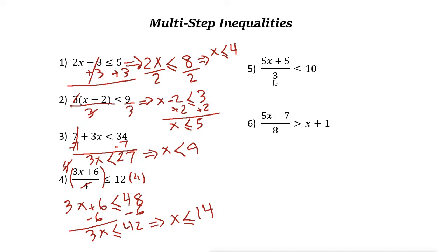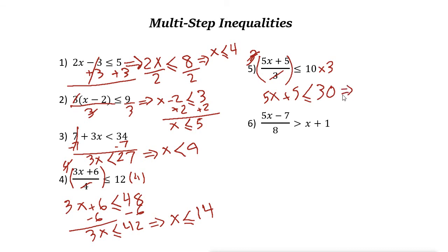Next one — again, we have fractions. Multiply both sides by 3. I chose more complicated questions to help you understand the process for solving multi-step inequalities. So multiplying 3 on both sides, the two 3s cancel out, giving 5x plus 5 less than or equal to 30. Subtract 5 from both sides — these cancel out — giving 5x less than or equal to 25. Divide both sides by 5, so x less than or equal to 5.